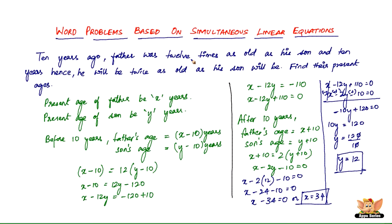I'm briefing the whole problem for you again before I close. First, identify what we have to find and give it variable names — x, y, or whatever you want. Then flow with the problem: it says 10 years ago, so you subtract 10 years. Father was 12 times as old as the son — form an equation, then another equation. The problem has it all; you just take it from the problem. Once you get these equations, it's simple operations. I'll see you in the forthcoming videos with more word problems based on simultaneous linear equations.